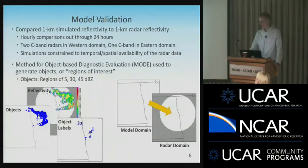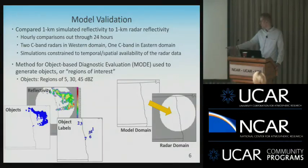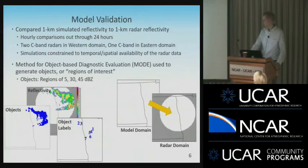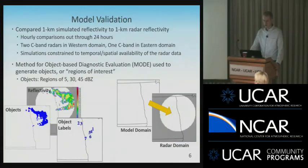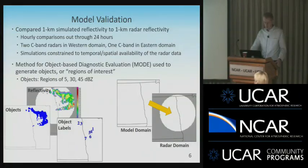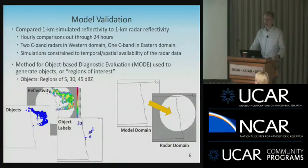We constrained all simulations to match the temporal and spatial availability of radar data, only verifying models when we had radar data present that hour, and we constrained it to the scale of the radar. Since radar degrades resolution with distance, we cut the model domain down to match the radar. We used the Method for Object-based Diagnostic Evaluation (MODE) to generate objects or regions of interest. For this study, regions of interest are defined as discrete cells or regions above 5, 30, or 45 dBZ — checking three different thresholds. We didn't use matching or merging, just the raw object attributes such as counts, area, and similar information.